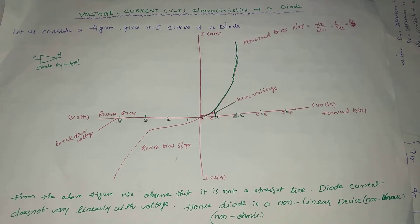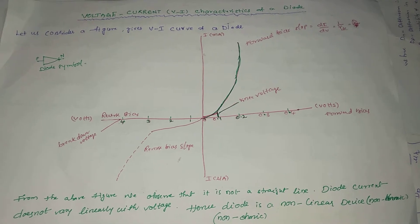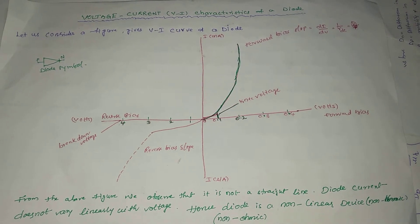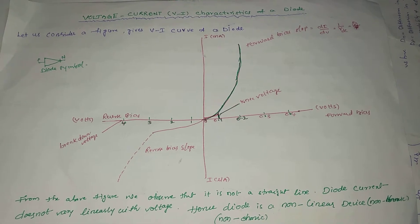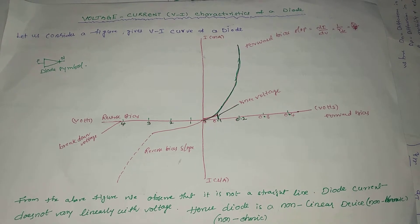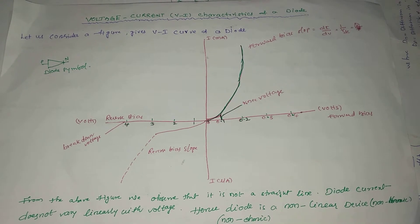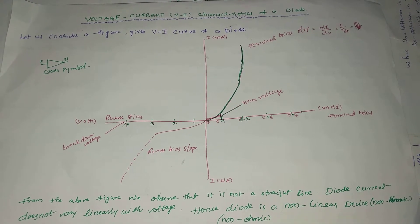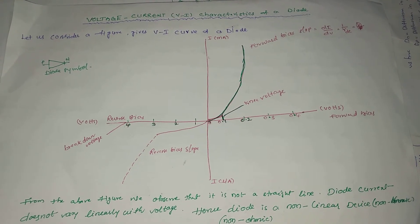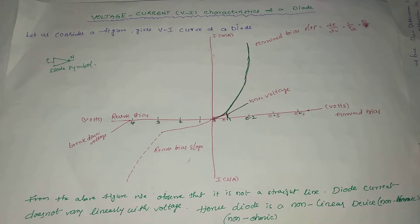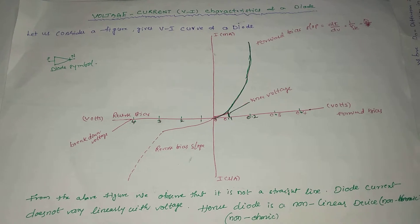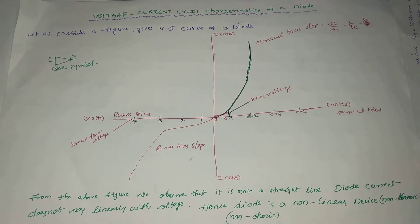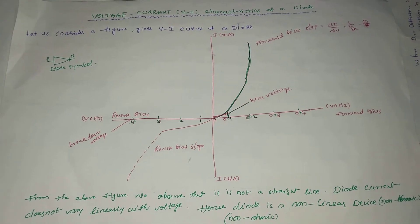So on X-axis in the positive direction, the voltage will start from 0, 0.1, 0.2, 0.3, 0.4 and reverse formation 1, 2, 3, 4. Similarly, on positive of Y-axis we consider the current in mainly Amperes. In reverse formation we consider microamperes (μA).